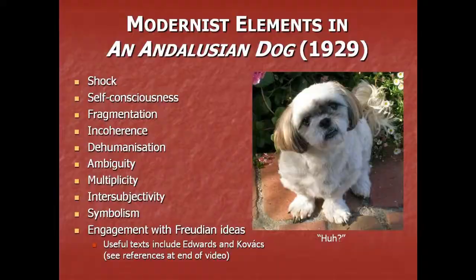What I want to do now is give you a broad survey of some of the modernist elements in An Andalusian Dog, and then we'll move into a more detailed look at the specifics of the film. Firstly, we have the element of shock, such as the initial image at the start of the film, which you probably can't get out of your mind if you've just watched it for the first time. The film exhibits an apparent awareness of its own status as textual representation, and this self-consciousness is contributed to by numerous other modernist elements.